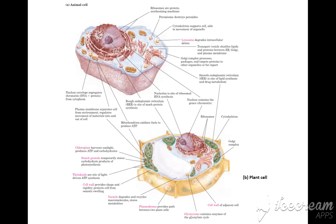There are two different cells — one from animals and one from plants. They have small differences: plant cells have chloroplasts and a cell wall, while animal cells don't have any chloroplast or cell wall.